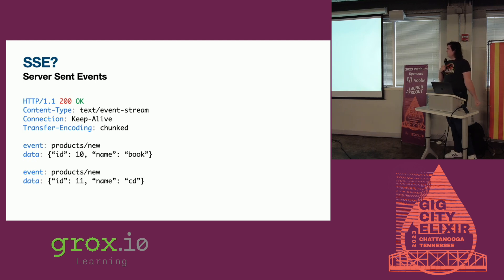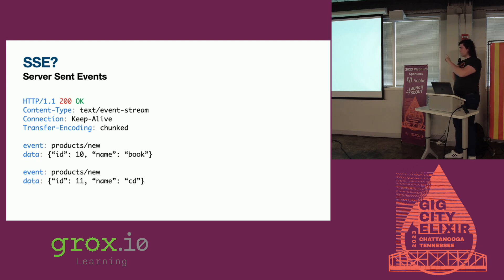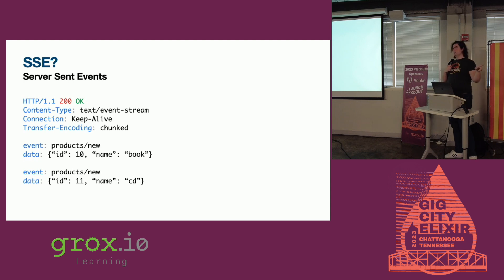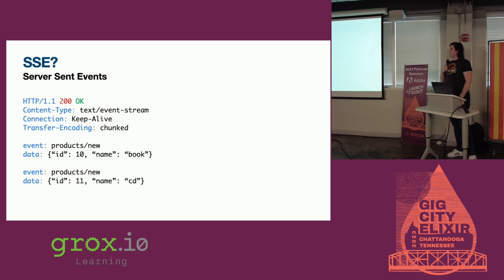It's kind of all it is — just a standard response, a text event stream. You need to chunk encode it so that it's a long-lived connection. Anytime the server has a new event, it puts event, the type, data, whatever you want in that line. You can put an ID. Then it's two new lines to say that that is done. You can just have a long-lived connection. It's an event source in JavaScript — looks very similar to a WebSocket source.